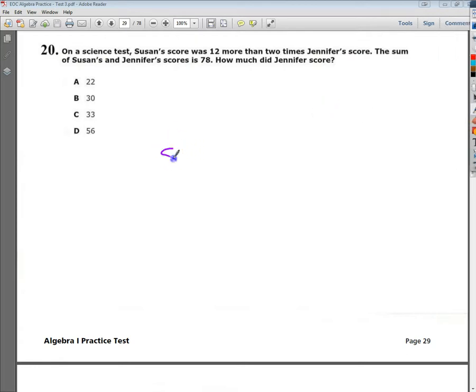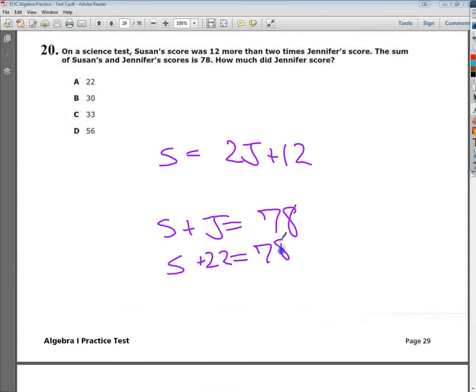We're still going to have to go with the fact that Susan's score is 12 more than 2 times Jennifer's plus 12. Or 12 more than 2 times Jennifer's. And then we have to have S plus J is equal to 78. Now, what I could do here is try plugging in numbers for Jennifer's score. So I just subtract 22 here.